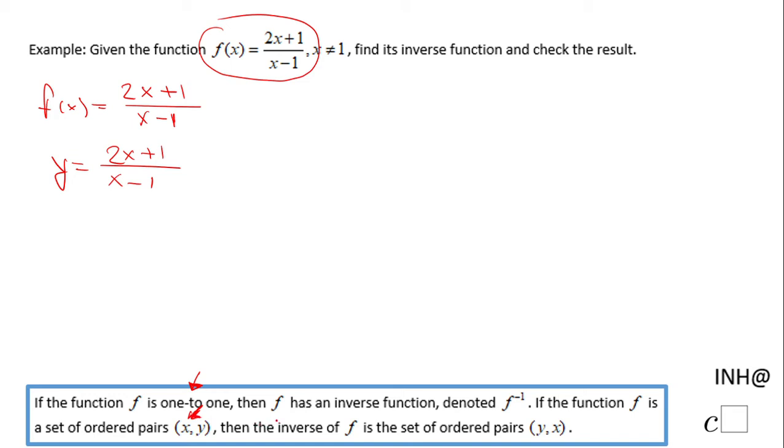And this (y, x) belongs to the inverse function. So just based on that, you should know that the next step is to interchange x and y—switch x and y. So instead of y, I'm going to write x equals 2 times y plus 1 over y minus 1.